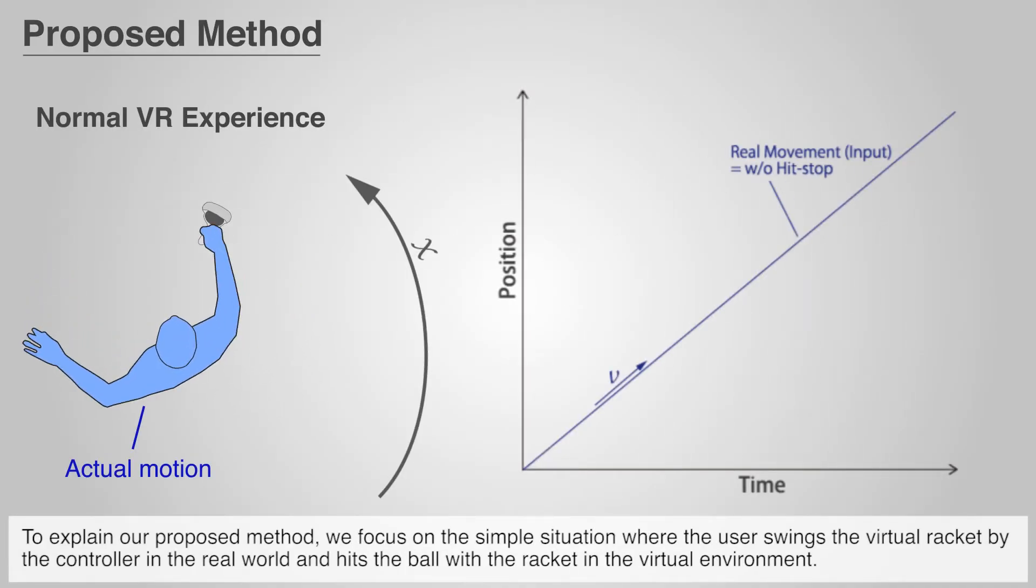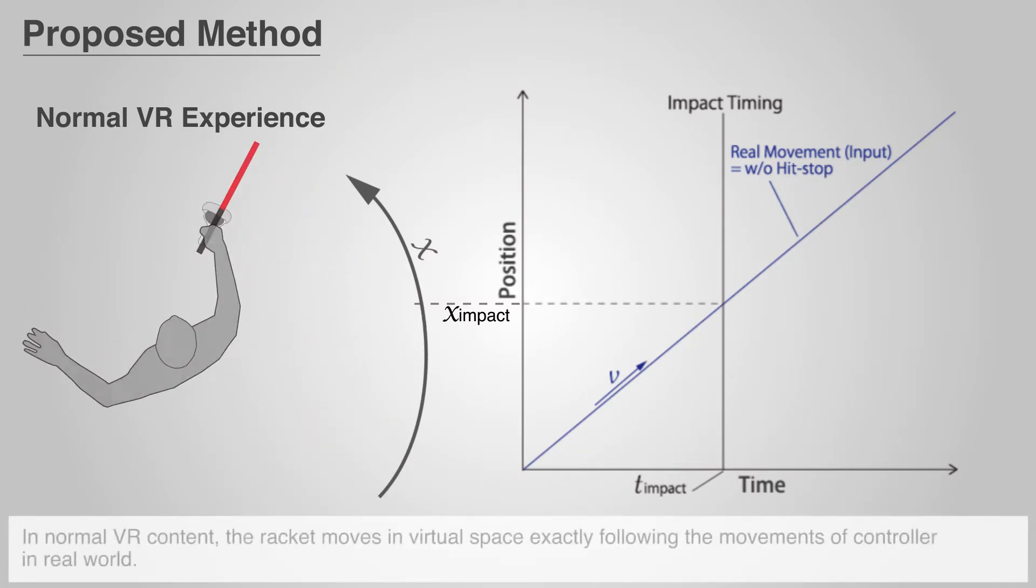To explain our proposed method, we focus on the simple situation where the user swings the virtual racket by the controller in the real world and hits the ball with the racket in the virtual environment. In normal VR content, the racket moves in virtual space exactly following the movements of controller in real world.